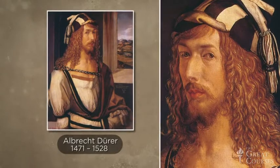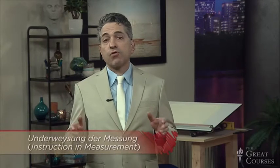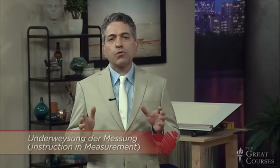Albrecht Dürer, who many of you may know from his iconic drawing of praying hands, also wrote a remarkable and very technical book on drawing. Part 1 was published in 1525, followed by Part 2 in 1538. It was titled 'Underweysung der Messung,' or 'Instruction in Measurement.' Dürer offers the same advice as Leonardo: 'Place a clean, flat plane of glass into a quadrangular frame. Now draw whatever you wish.' Draw on the glass.